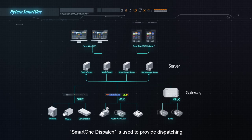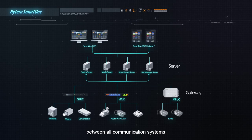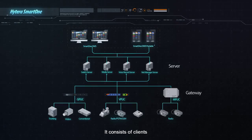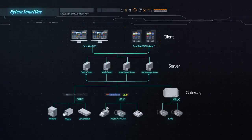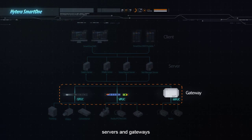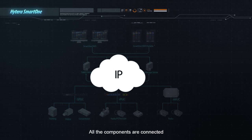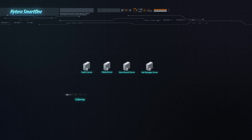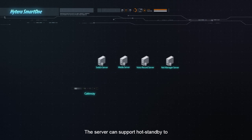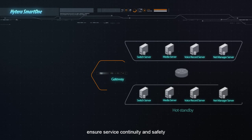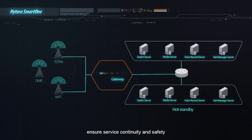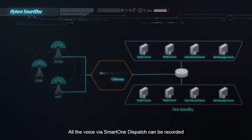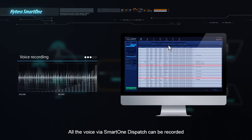SmartOne Dispatch is used to provide dispatching between all communication systems. It consists of clients, servers, and gateways. All components are connected via IP and support flexible networking. The server can support HUS standby to ensure service continuity and safety. All voice communications via SmartOne Dispatch can be recorded.